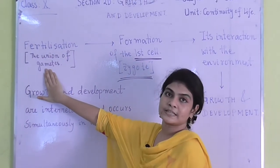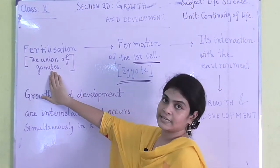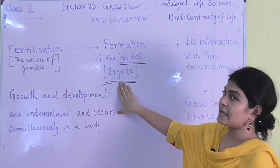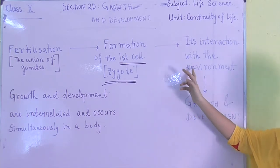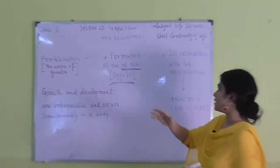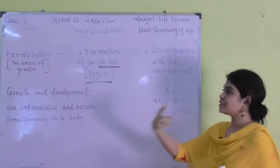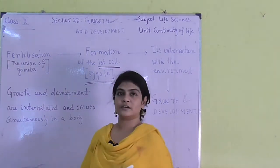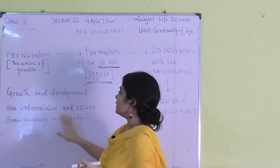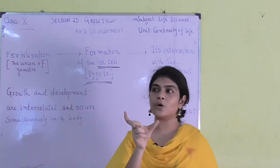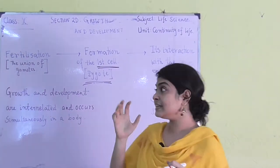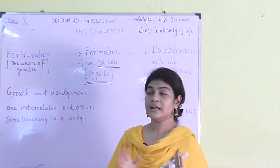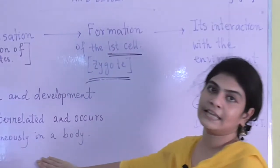The very first step is the union of the gametes through the process of fertilization, then formation of the zygote. Once the zygote is formed, it undergoes constant interaction with both internal and external environment, which initiates the process of growth and development. Growth and development are always taken together, but we have to understand that they are not the same, though they are very much interrelated to each other and always occur simultaneously in a body.